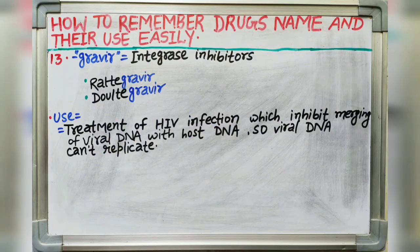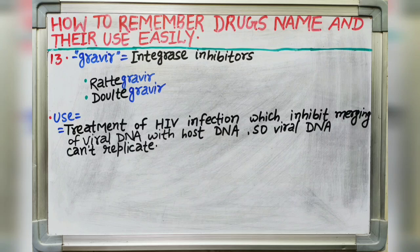Next suffix is -gravir, which indicates integrase inhibitors. Drugs like raltegravir and dolutegravir end with the -gravir suffix. These drugs are used in treatment of HIV infection by inhibiting merging of viral DNA into host DNA, so viral DNA cannot replicate.